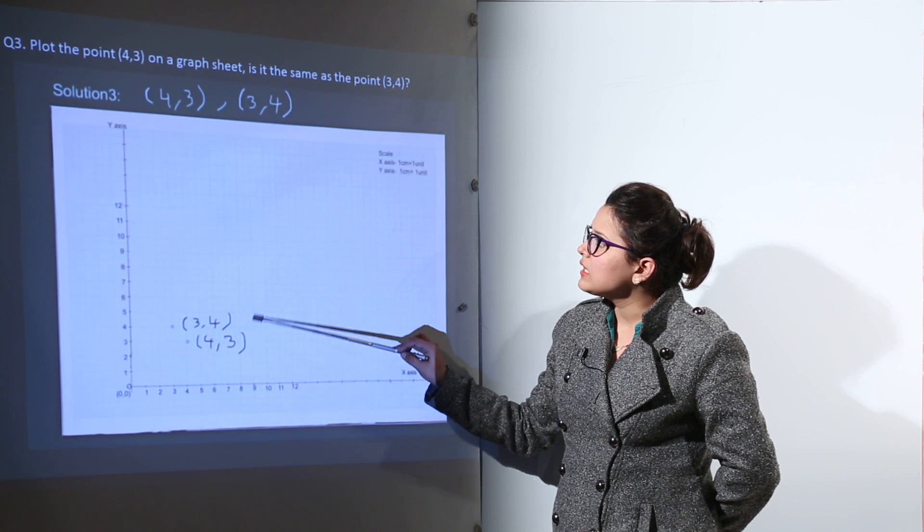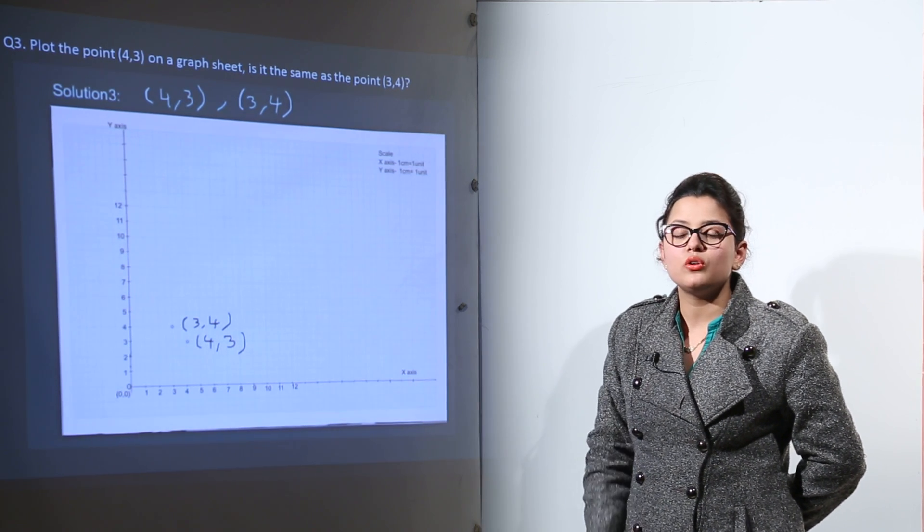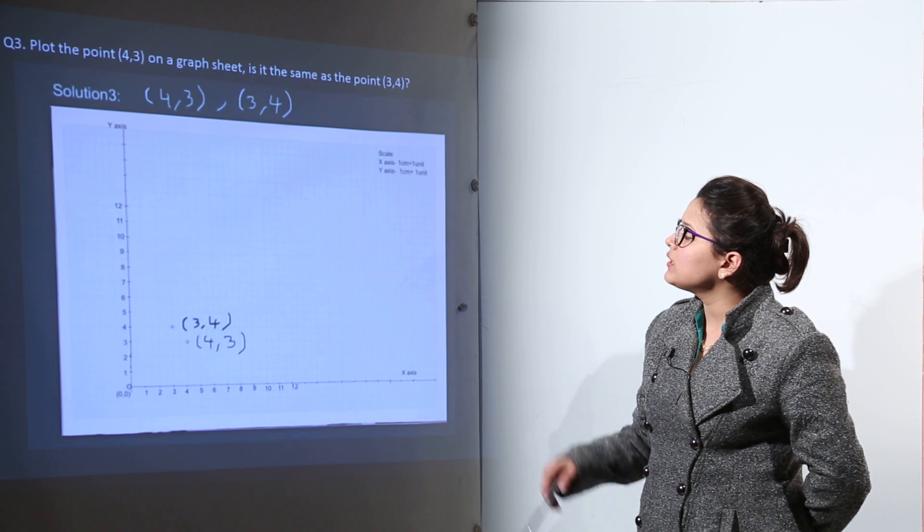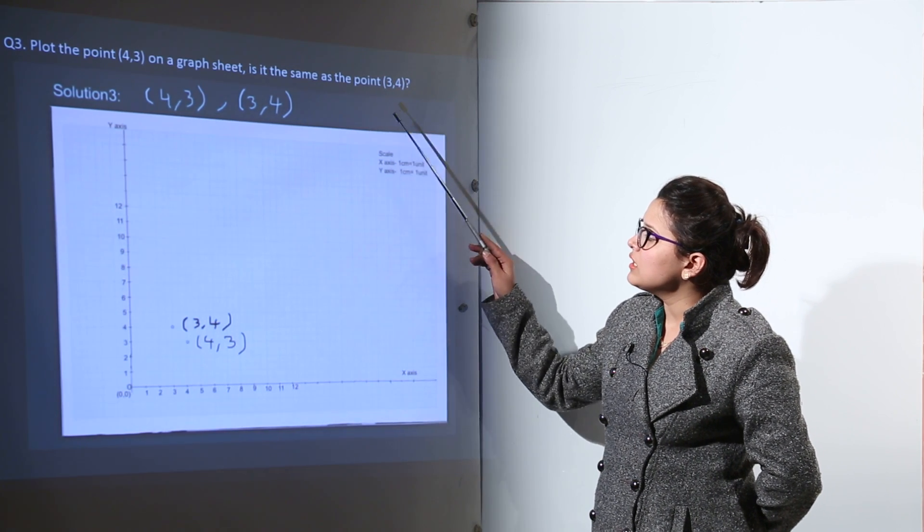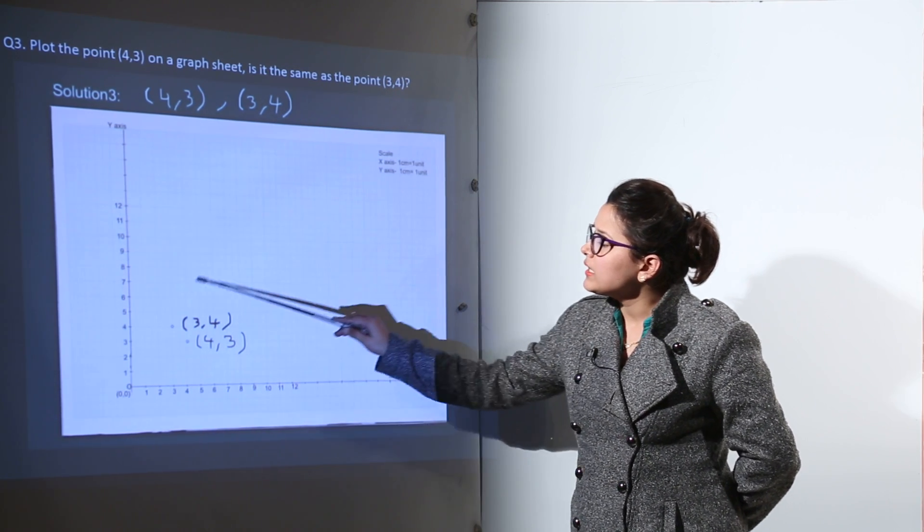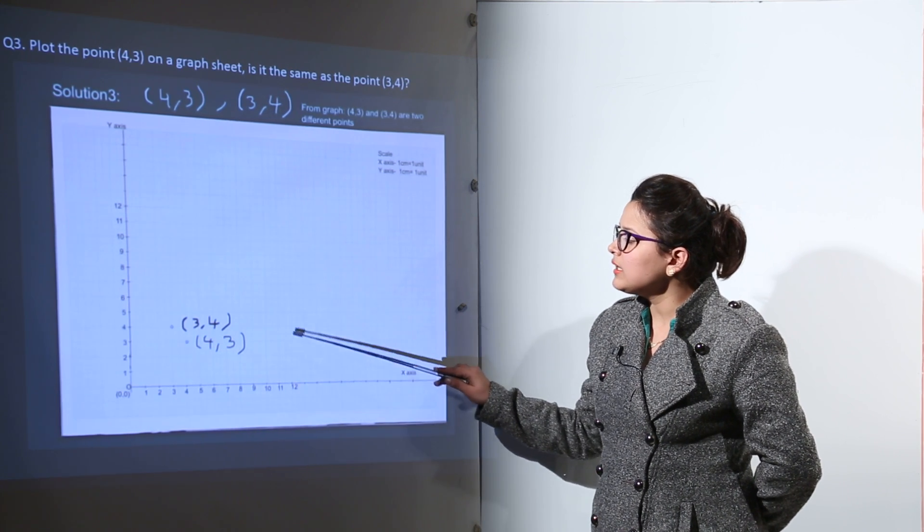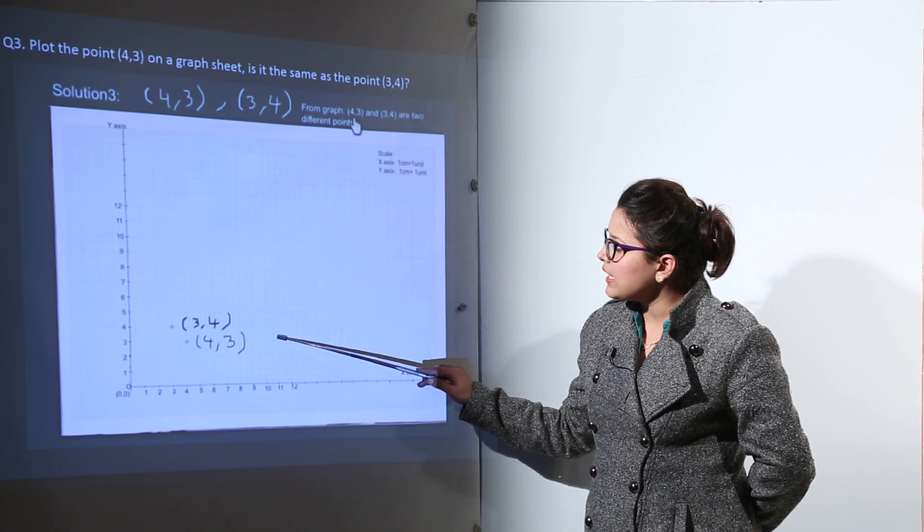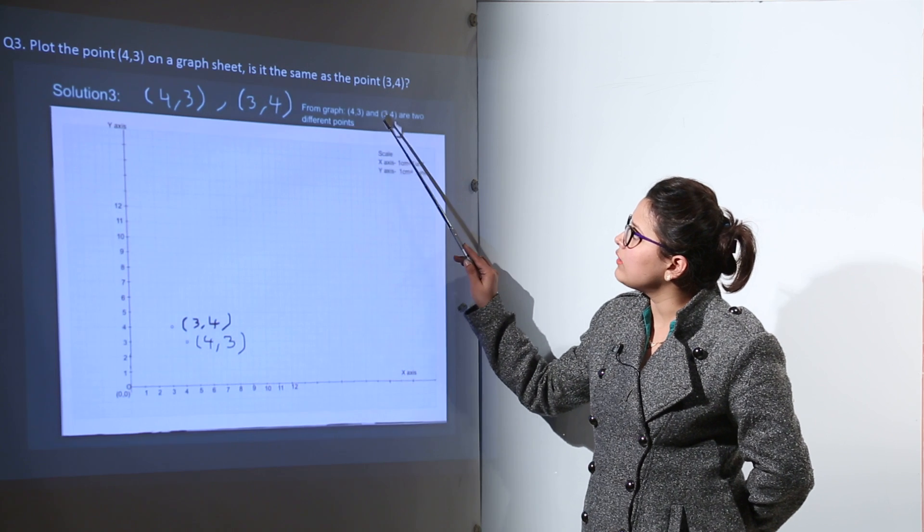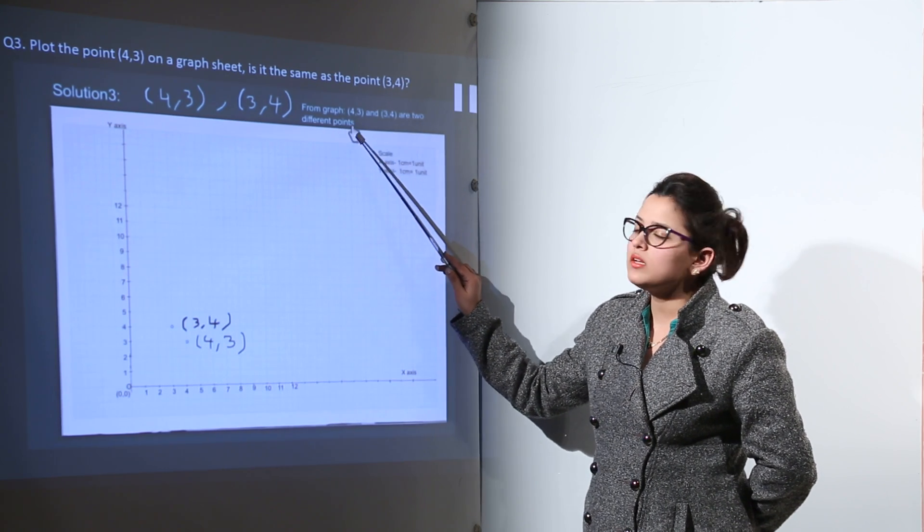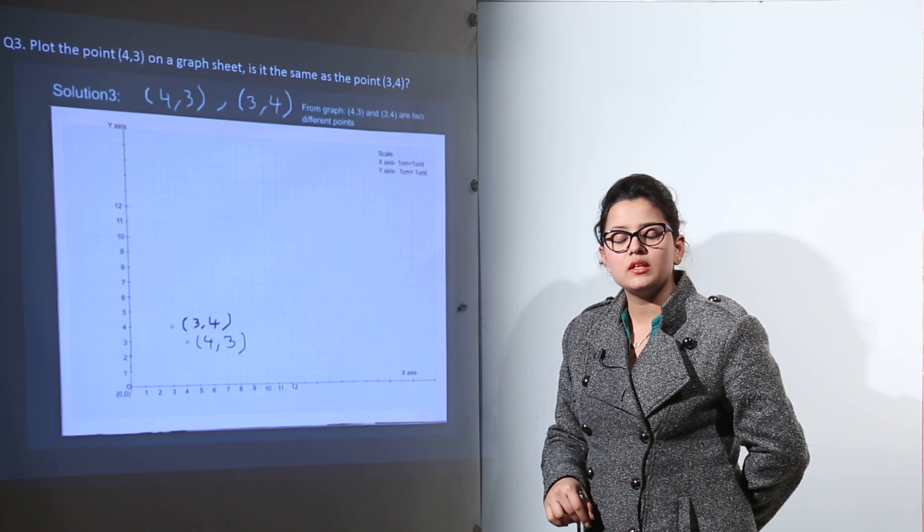Now we can clearly see that both these points are not the same. So when you are giving answer to this question, you can clearly tell that from the graph we have drawn, we can identify and analyze that 3, 4 and 4, 3 are two different points of the graph. They are not the same.